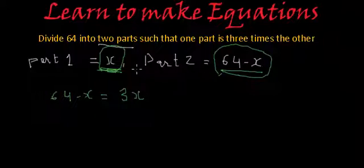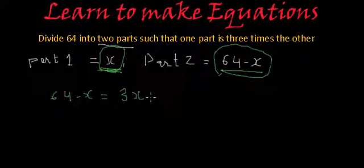So if we assume the smaller part is x, then 64 minus x, which is the bigger part, will be three times the smaller part, which is x.